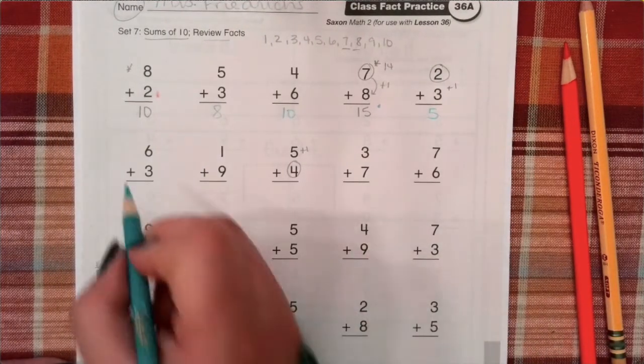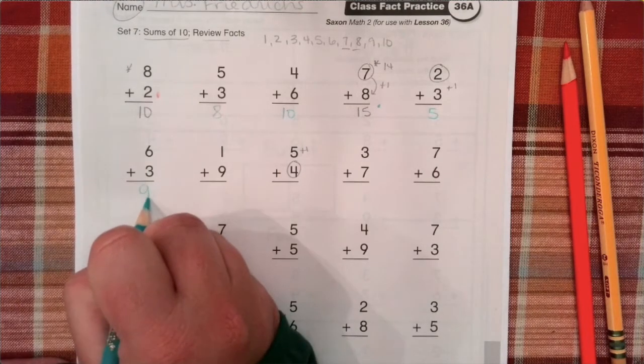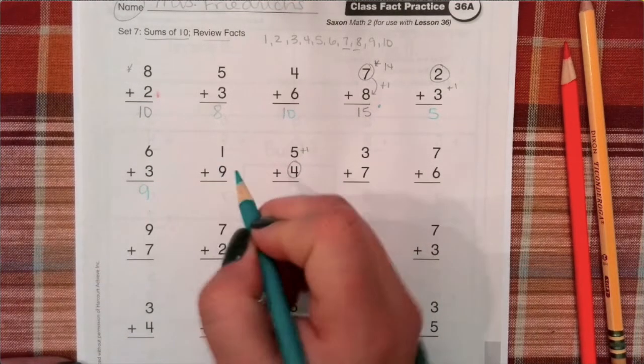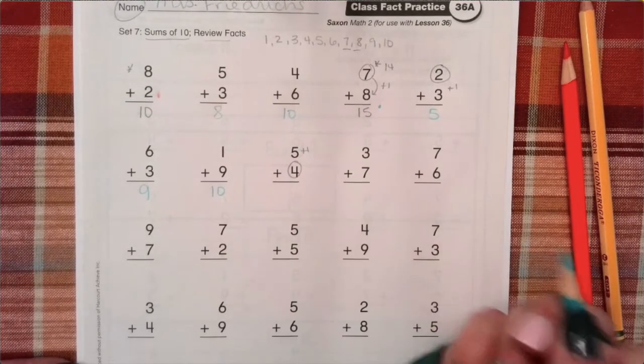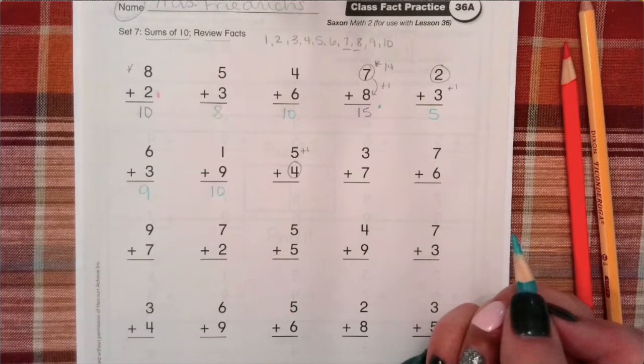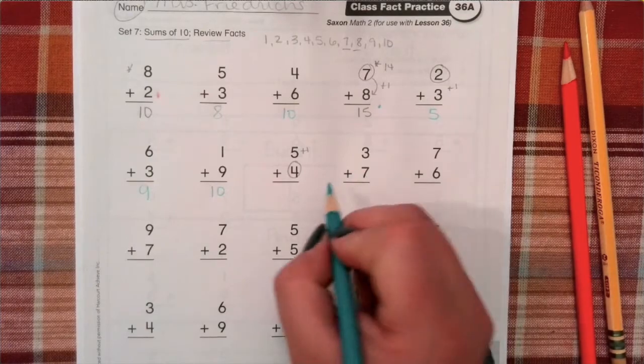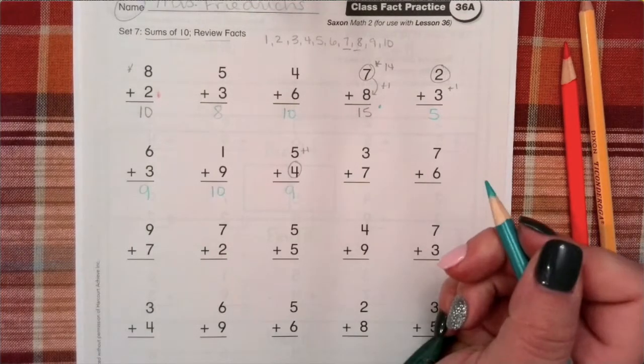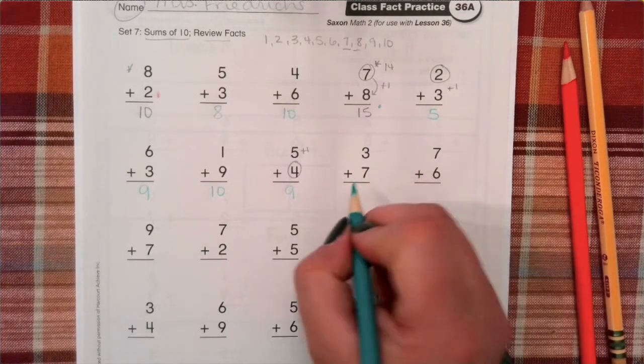We already did seven plus eight is fifteen. Two plus three is five. Next row. Six plus three is nine. One plus nine is ten. Five plus four is nine. Seven plus seven is ten.